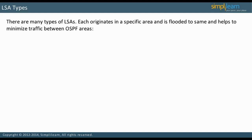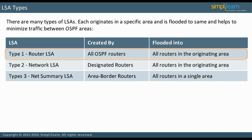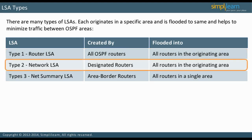The table on the slide shows the three LSA types. Type 1 LSA is a Router LSA. It is created by all OSPF routers and flooded into all routers in the originating area — in other words, it stays within one area. Type 2 LSA is a Network LSA. It is created by designated routers and flooded into all routers in the originating area. These LSAs also remain within one area.